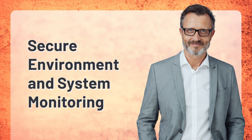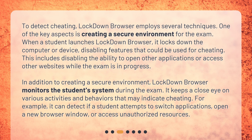Secure Environment and System Monitoring. To detect cheating, Lockdown Browser employs several techniques. One key aspect is creating a secure environment for the exam. When a student launches Lockdown Browser, it locks down the computer or device, disabling features that could be used for cheating — including the ability to open other applications or access other websites while the exam is in progress. Lockdown Browser also monitors the student's system during the exam, keeping a close eye on activities and behaviors that may indicate cheating. For example, it can detect if a student attempts to switch applications, open a new browser window, or access unauthorized resources.